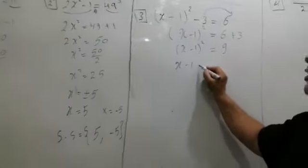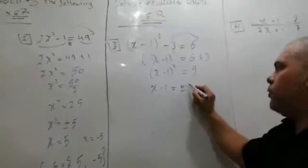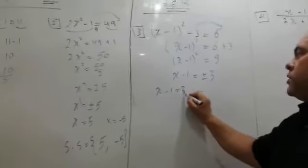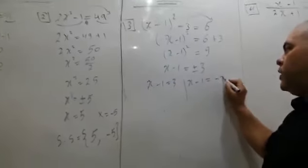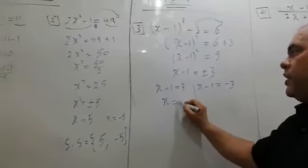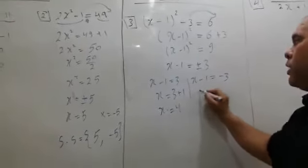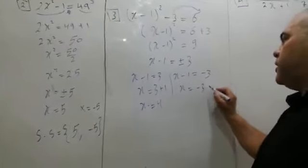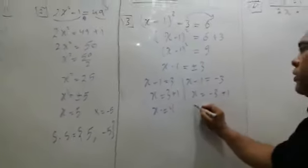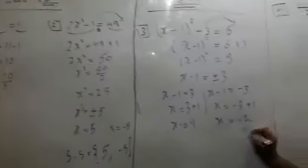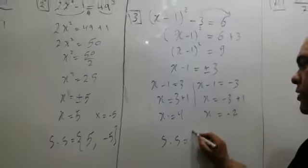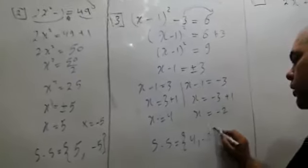Then x minus 1 equals positive or negative 3. So x minus 1 equals 3, x minus 1 equals negative 3. Then x equals 3 plus 1, then x equals 4. x equals negative 3 plus 1, then x equals negative 2. Then solution set equals negative 2 and 4 as well.